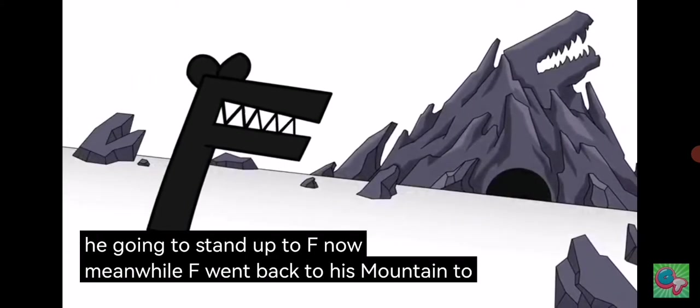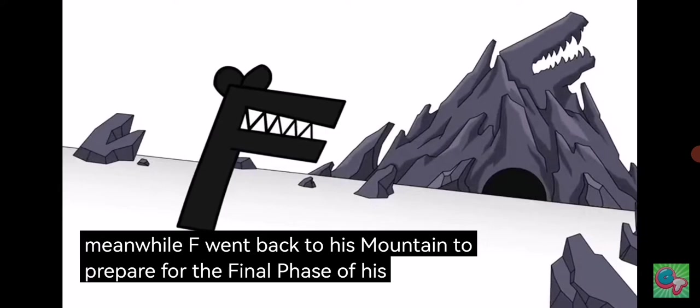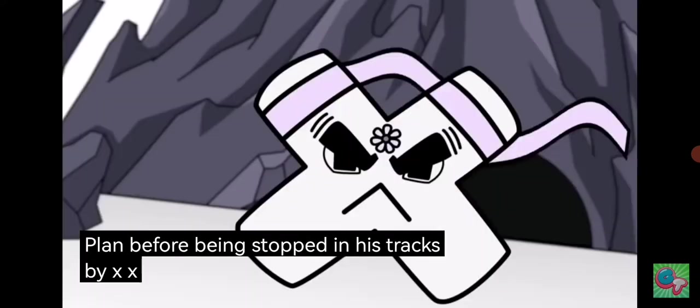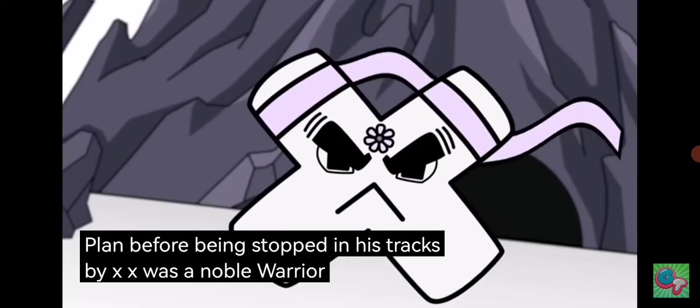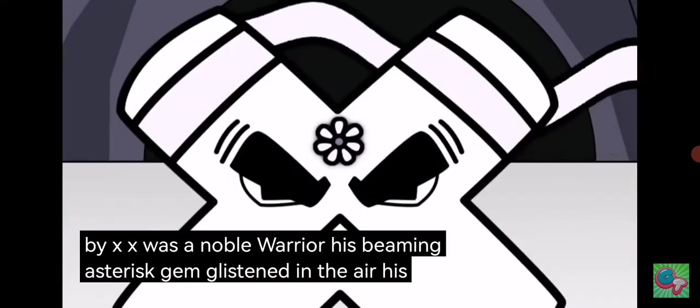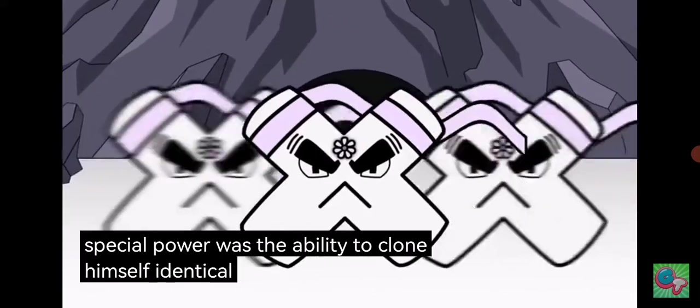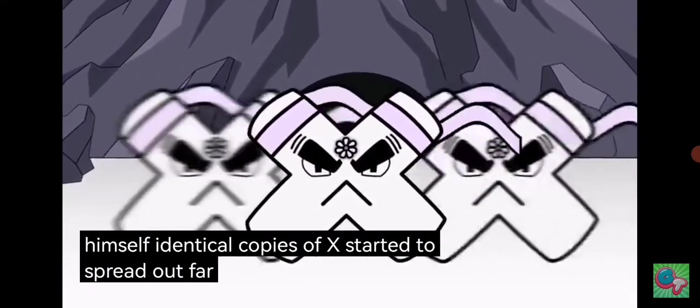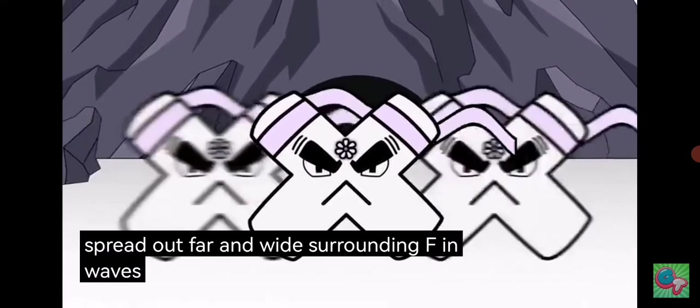Before being stopped in his tracks by X. X was a noble warrior. His beaming asterisk gem glistened in the air. His special power was the ability to clone himself. Identical copies of X started to spread out far and wide, surrounding F in waves.